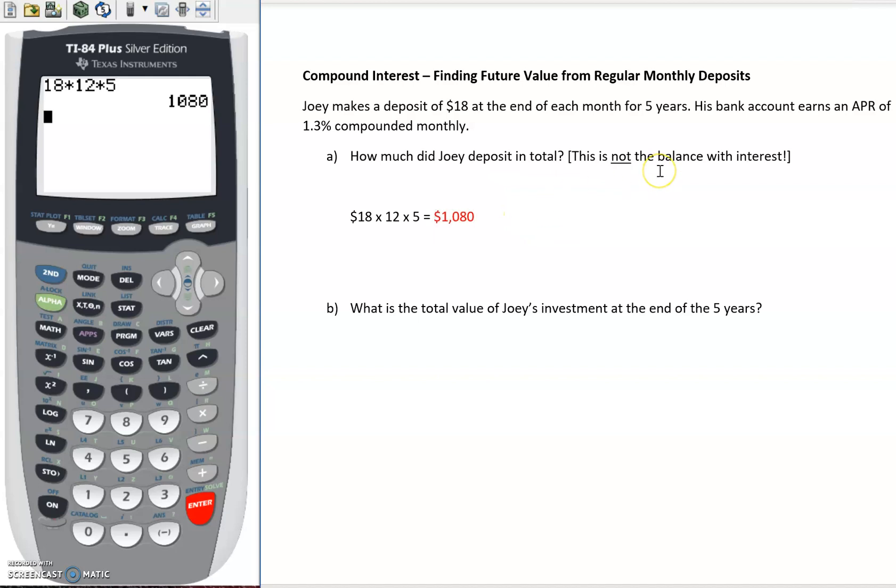But because we know that he's earning interest on this, at the end of five years the account balance should definitely be larger than this number. So over that course of time, interest has been earned on those deposits. So let's factor that in in Part B.